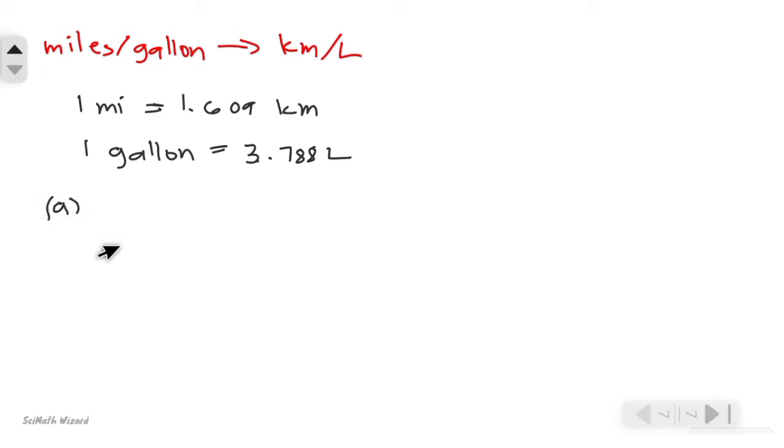In problem A, we have 55 miles per gallon, and we will convert this into kilometers per liter using the conversion factors. To cancel out the miles and gallon and convert to kilometers per liter, we can use 1 mile equals 1.609 kilometers, and to cancel out the gallon we can use this conversion.